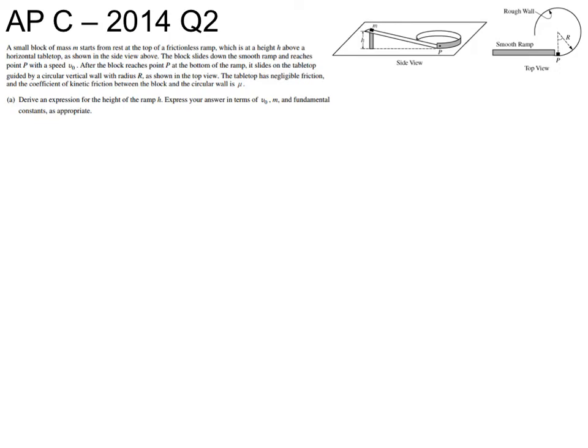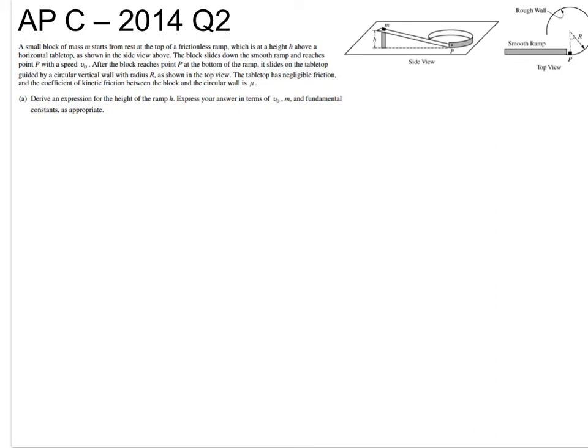Well, starting off easy, it says that it wants us to determine an expression for the height of the ramp, h, in the given terms. And they tell us that it's a smooth ramp that reaches the bottom with a speed v0. And we know that the height of the ramp is h. So, easiest thing, potential equals kinetic. mgh equals 1/2 mv squared. And boom, there we go.